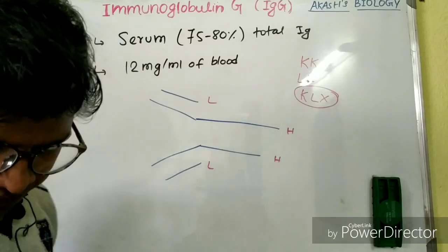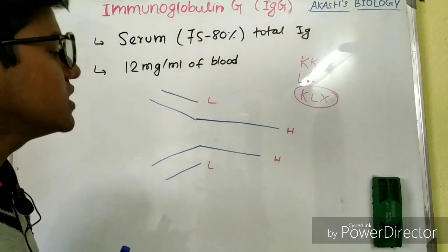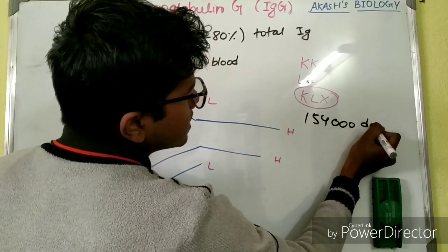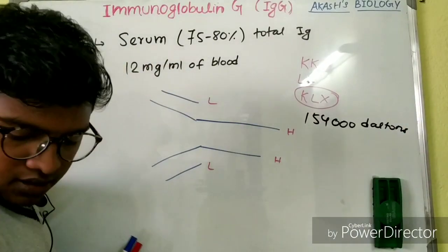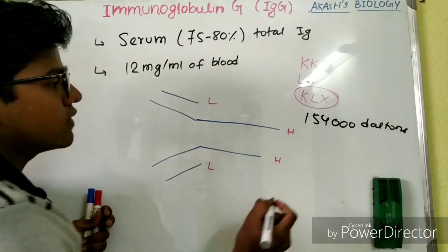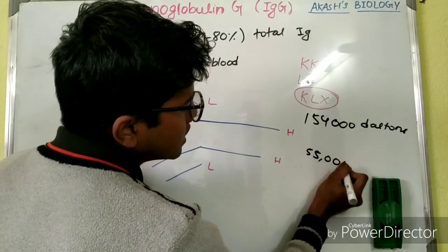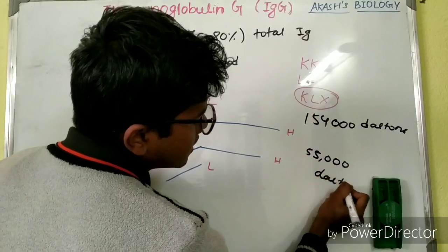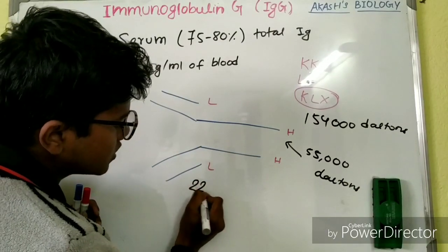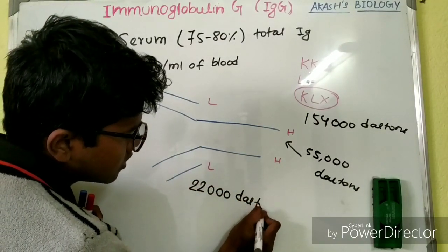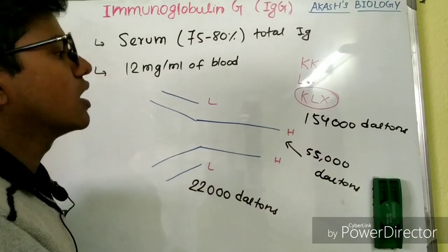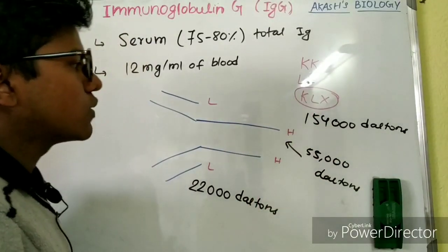The total molecular weight of immunoglobulin G is 154,000 daltons. The heavy chain has a molecular weight of 55,000 daltons, and the light chain has 22,000 daltons. Two heavy chains give 110,000 daltons and two light chains give 44,000 daltons, comprising a total of 154,000 daltons.